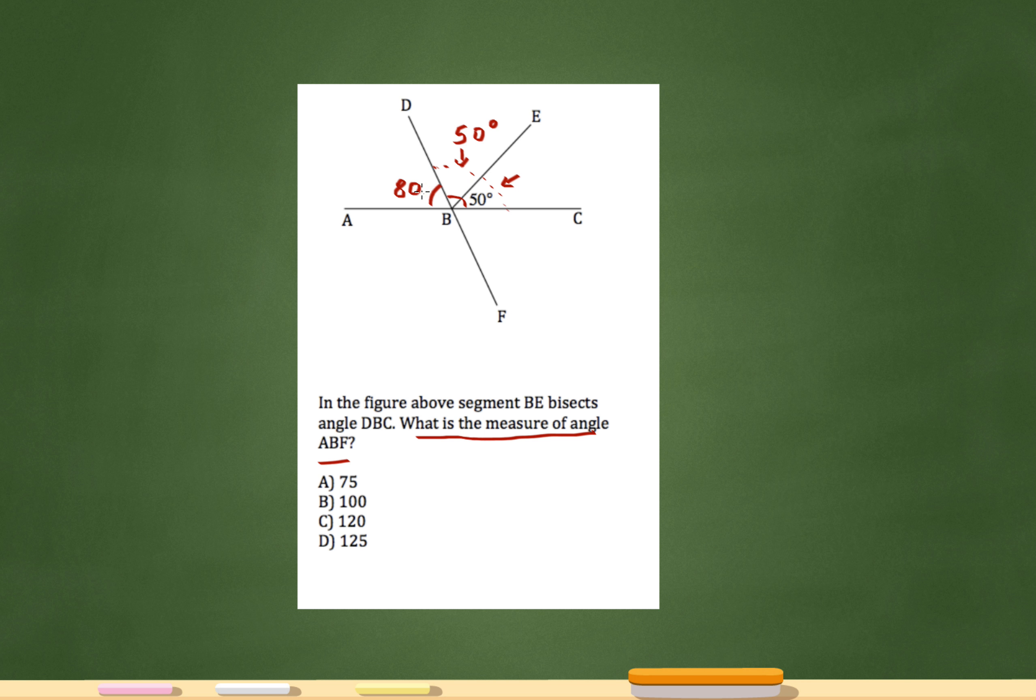See how DBA is 80? That means that FBC must be 80 as well because these are vertical angles. So this one and this one, they're opposite, meaning that they're vertical angles. Now, if this is 80 and this is 80, and if that doesn't connect, check this out too.